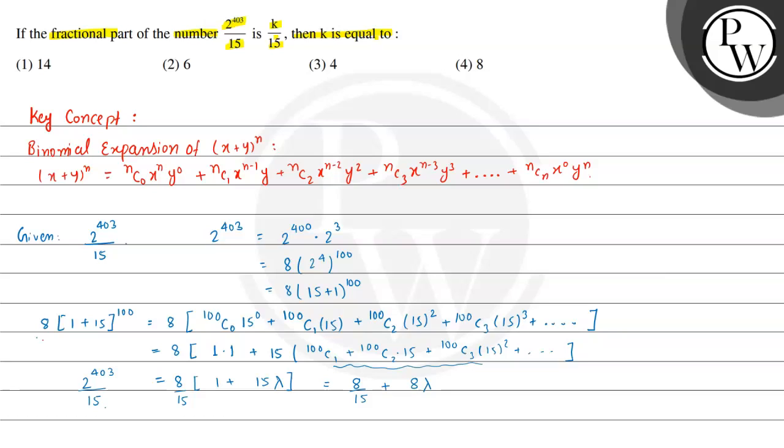We have to find the value of k where k/15 is the fractional part of the number. From here, if we look, the fractional part is 8/15. When we compare 8/15 with k divided by 15, we get the value of k is equal to 8. So finally we can say that the value of k is equal to 8.